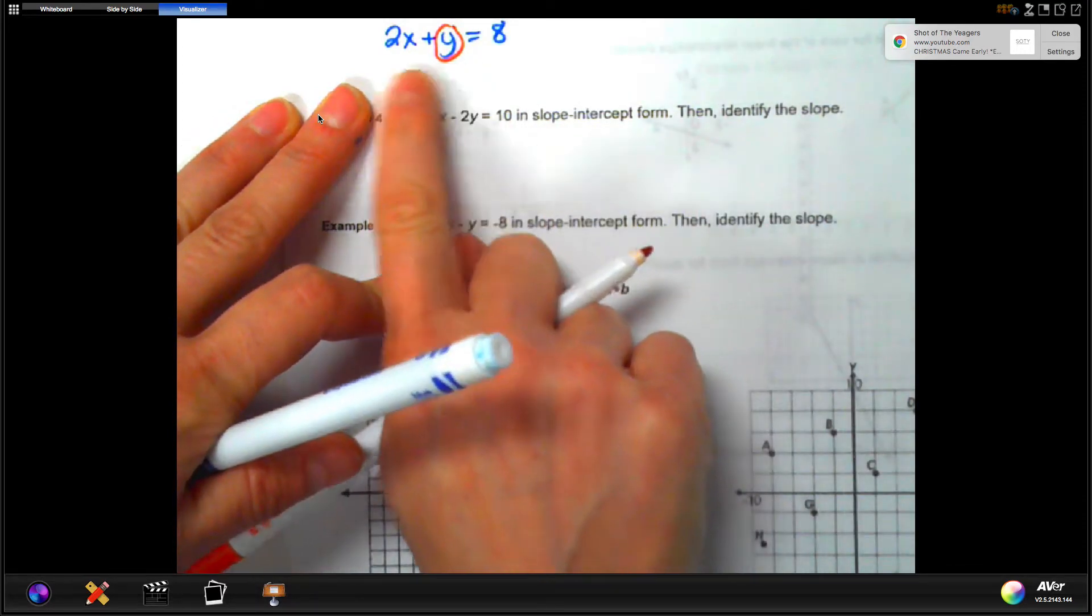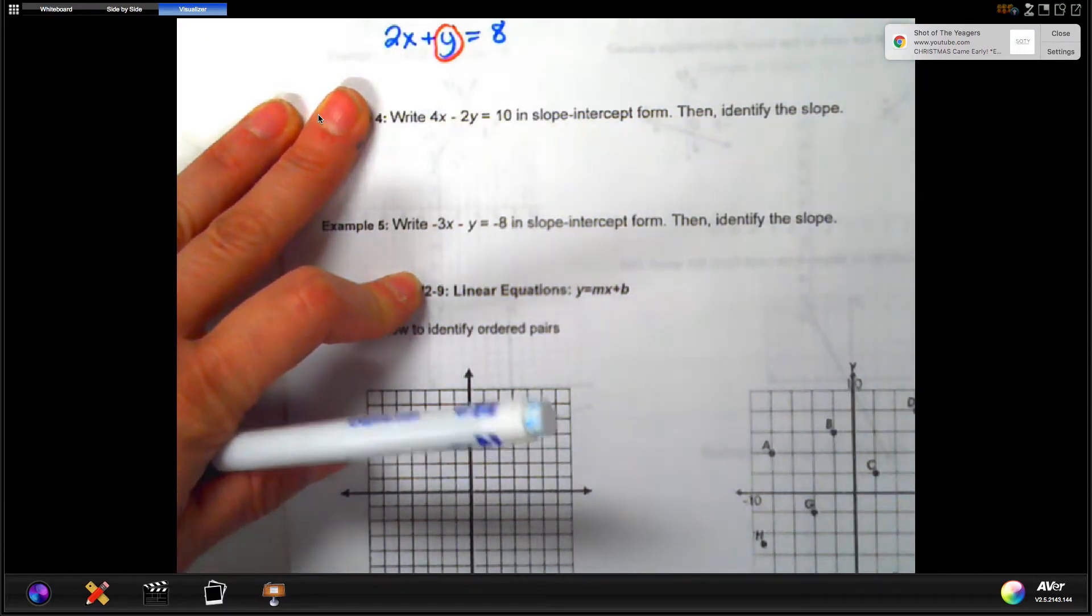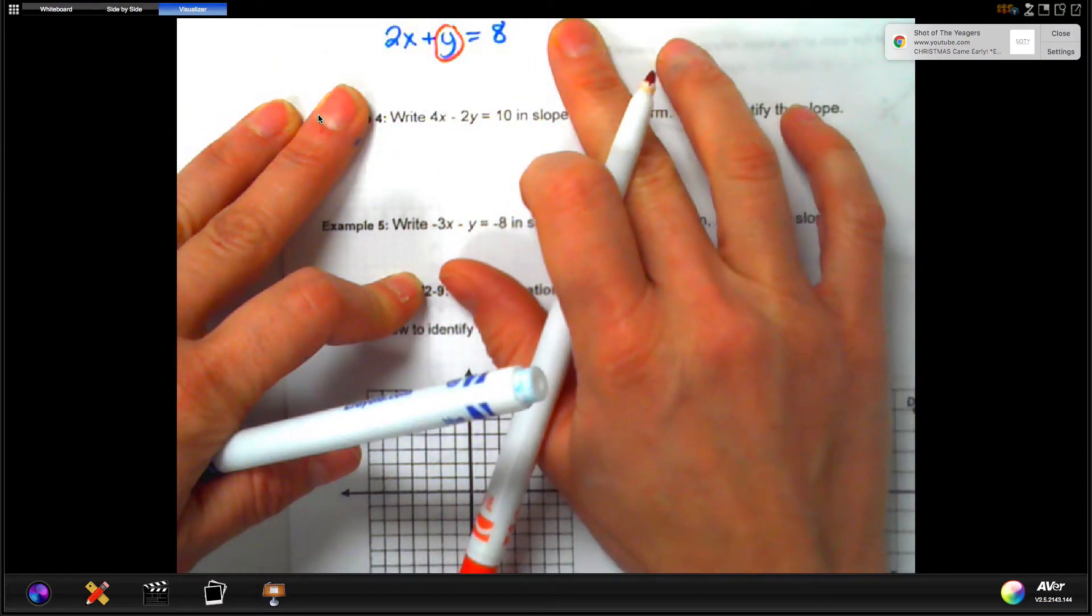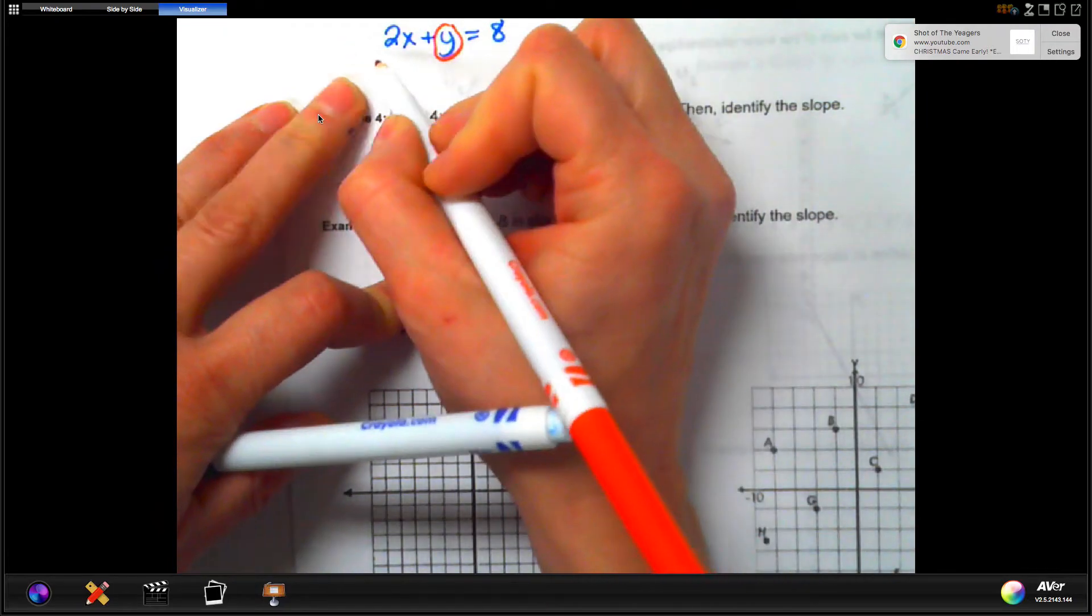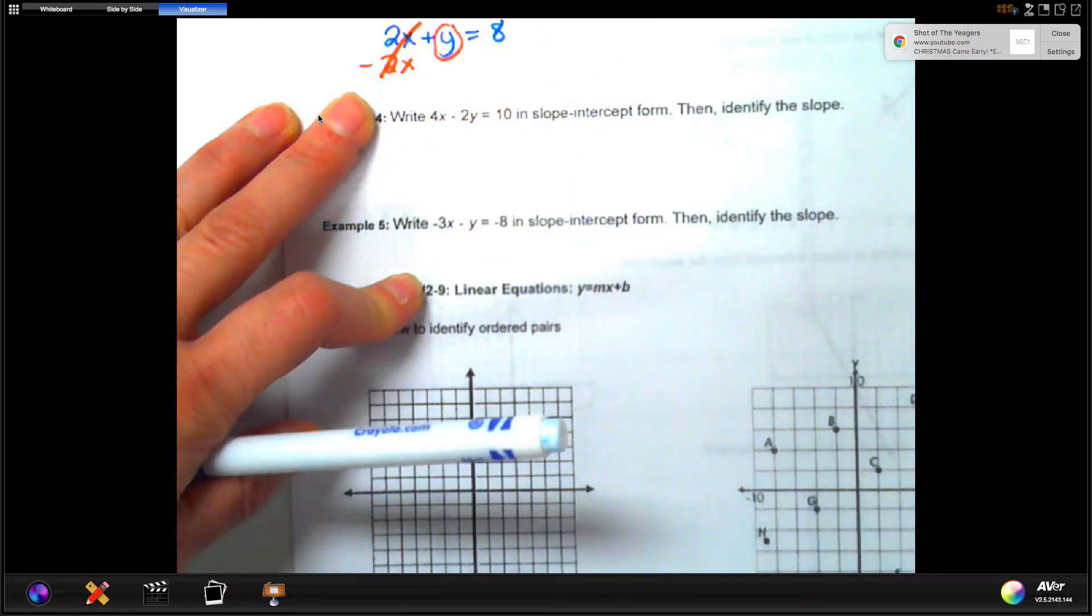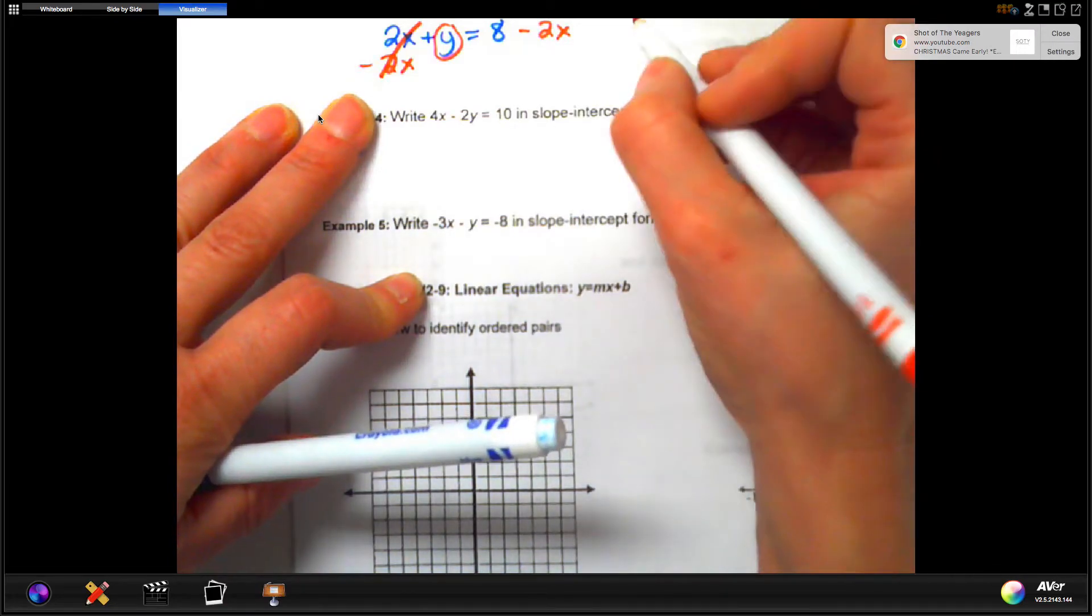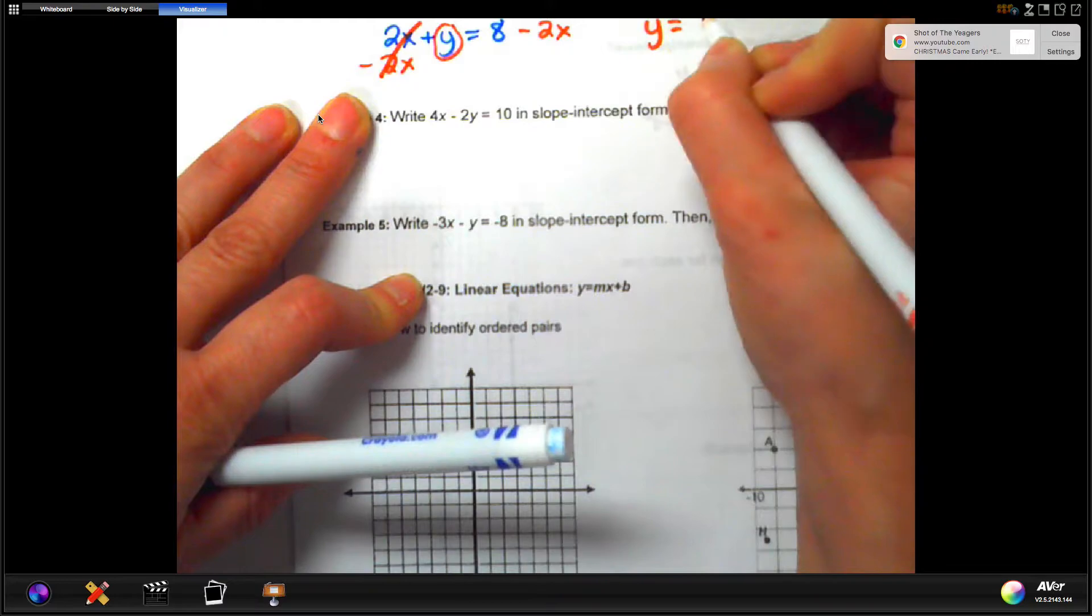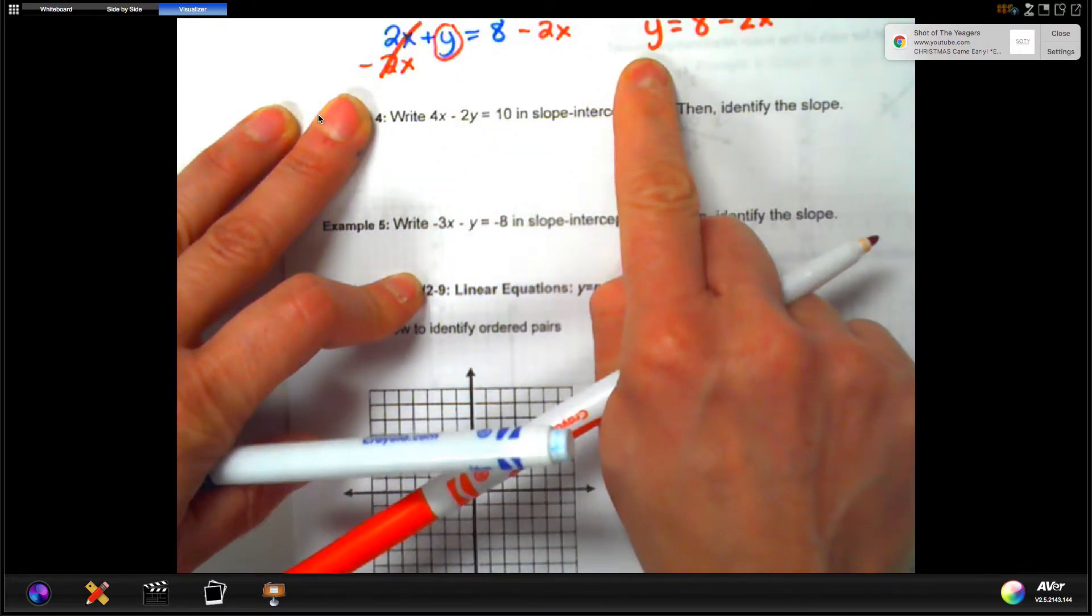In order to get it alone, 2x has got to go. And if you remember, when we were solving equations, in order to get something to the other side of the equation, we do the opposite. So, the opposite of positive 2x would be negative, or minus 2x. We can do that as long as we do it over here as well. So, we cancel it out there.